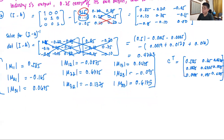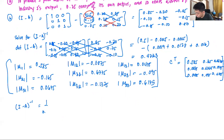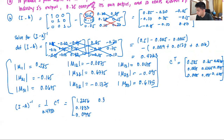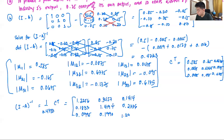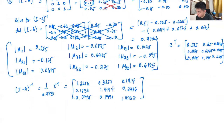With the adjoint C^T in hand, we can now solve for (I minus A) inverse, which equals one over the determinant times the adjoint. So that's (1 / 0.4733) times C^T, giving us the inverse matrix: 1.2256, 0.1833, 0.0995 in the first row; 0.3457, 1.4194, 0.1990 in the second; and 0.1414, 0.2776, 1.2937 in the third.